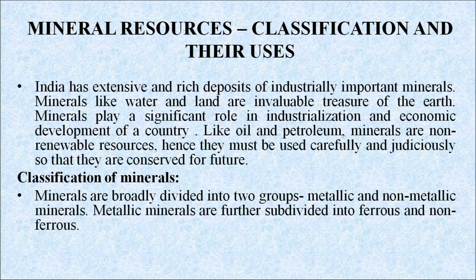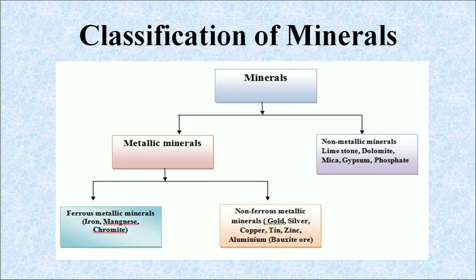Classification of minerals: ferrous metallic minerals include iron, manganese, chromium. Non-ferrous metallic minerals are gold, silver, tin, copper, zinc, etc. Non-metallic minerals include limestone, dolomite, mica, gypsum, etc.